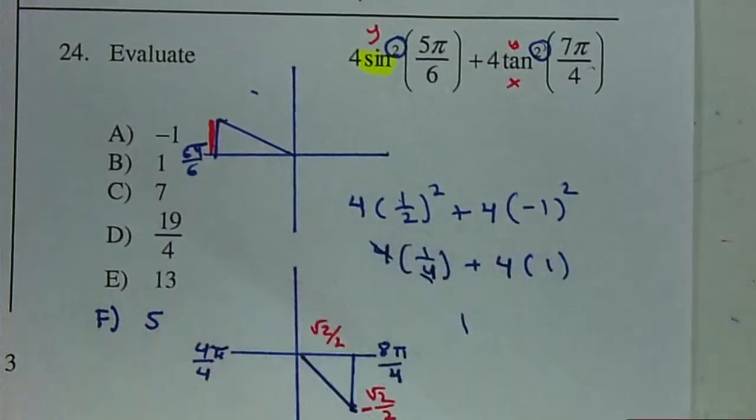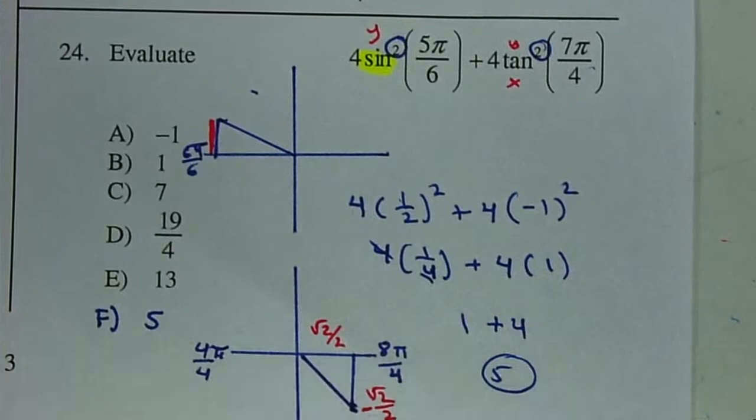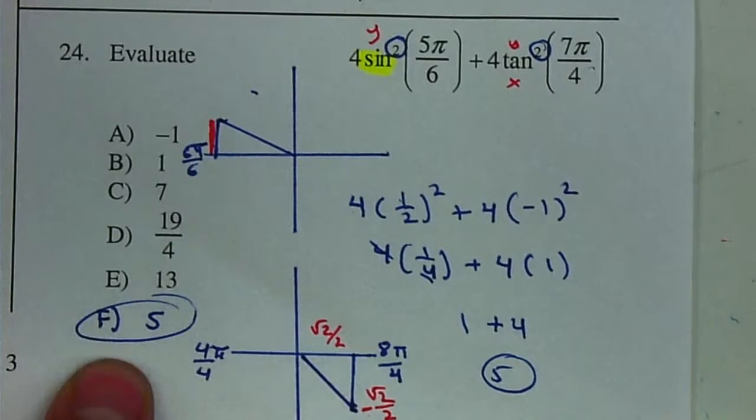We can think about the fours canceling. 4 times 1 is 4. So I'll give you a 5. So your answer is letter F, 5.